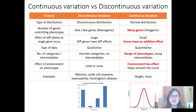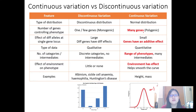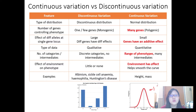Continuous variation is when a trait can be represented by a normal distribution — a bell curve. The bell curve is formed because the trait is coded for by many genes; it is a polygenic trait. Each of these genes has a small effect, but because there are so many genes, they all add up — we say the genes have an additive effect. It is usually quantitative data, resulting in a range of phenotypes with many intermediates. The environment also has an effect on the trait, which helps smooth out the curve into a normal distribution.